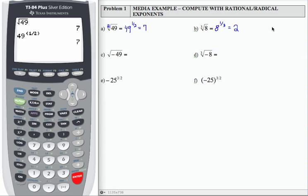Because 2 cubed equals 8. And over here, 7 squared equals 49. So let's see on our calculator.